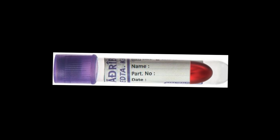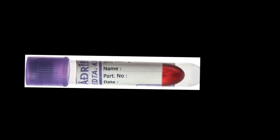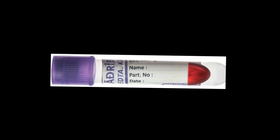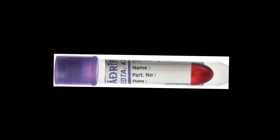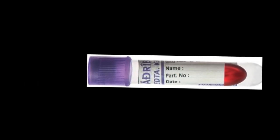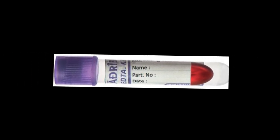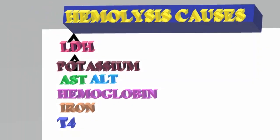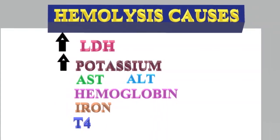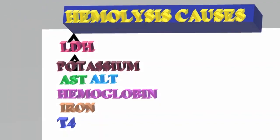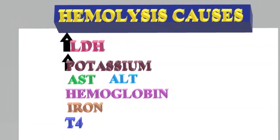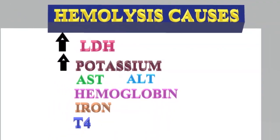Gentle inversions of the tube — 180 degrees upside down and then back right-side up — are recommended. Vigorous inversions may cause foaming and hemolysis. LDH and potassium are the most effective indicators of hemolysis. Other tests affected by hemolysis include AST, ALT, hemoglobin level, iron, and T4.